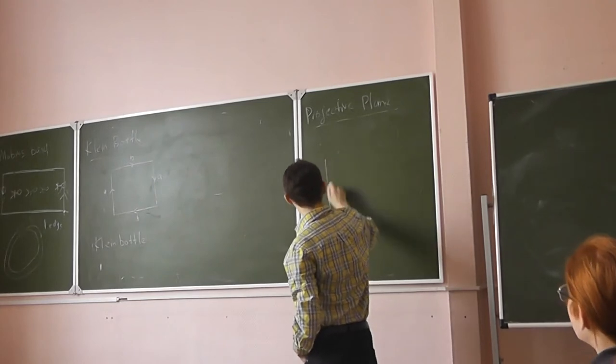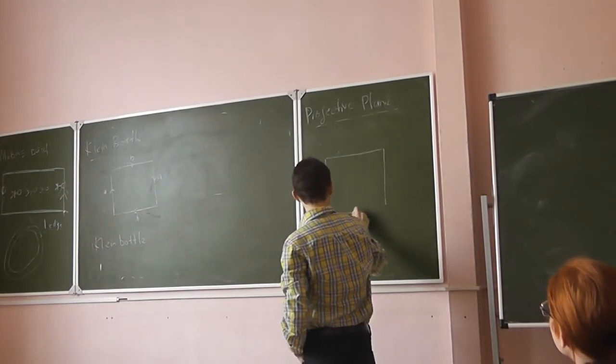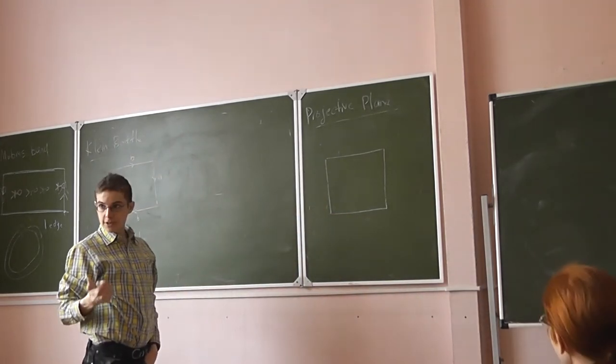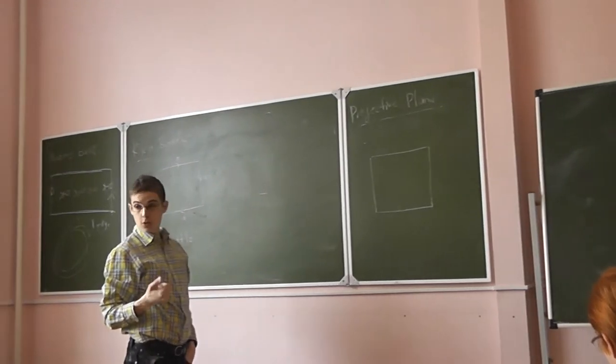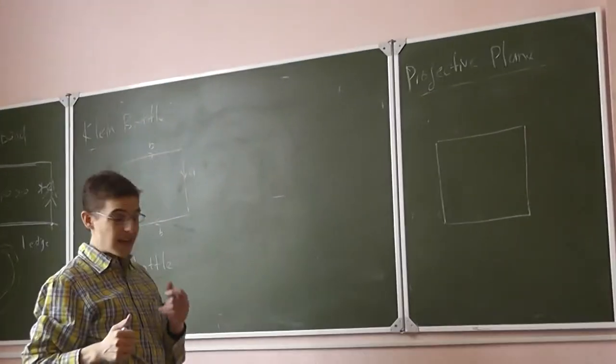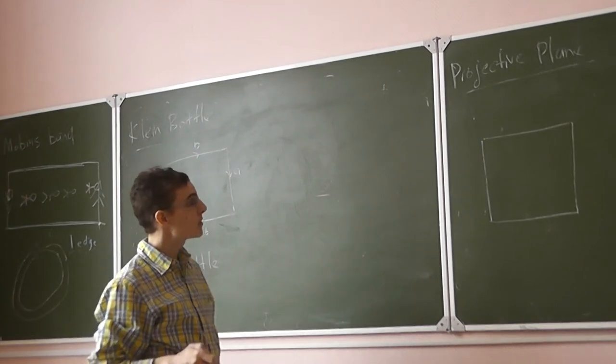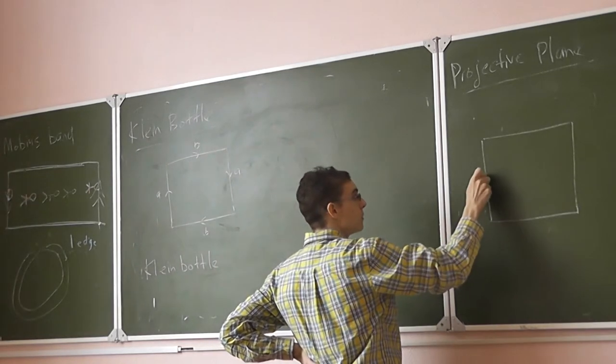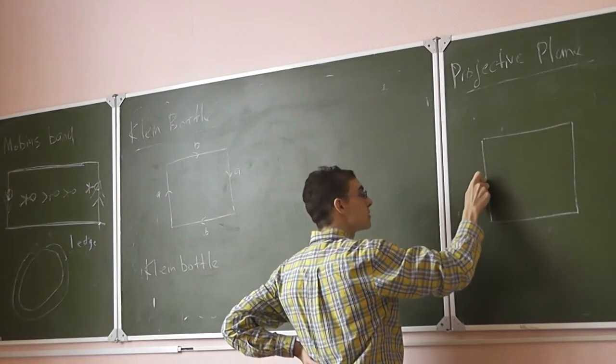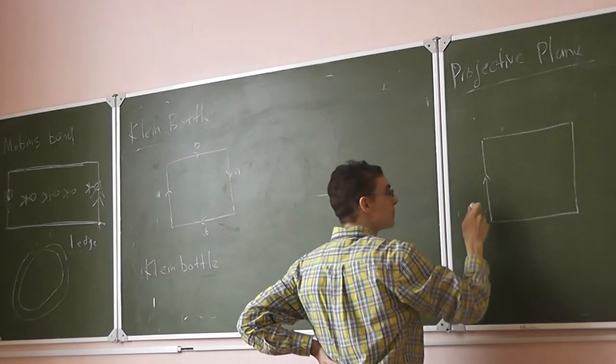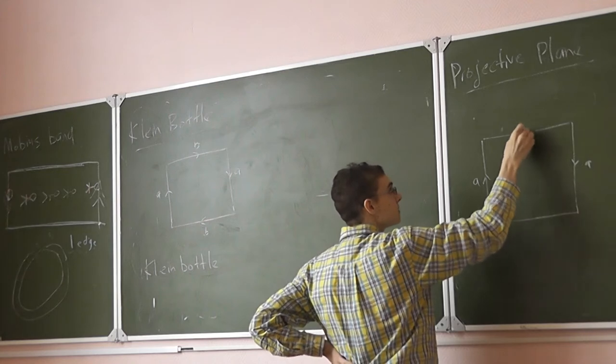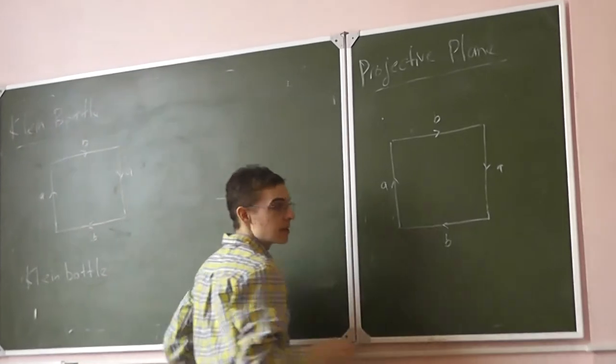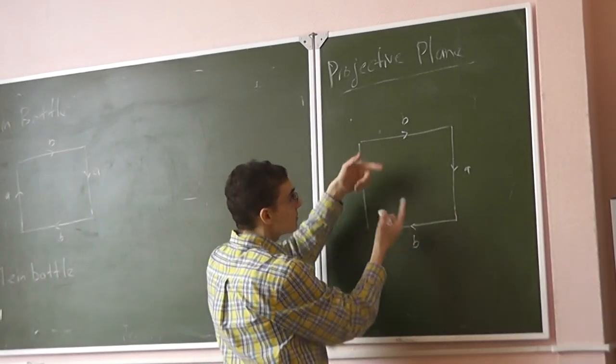So again we take, this is the projective square. Now we've done on the square we're drawing the two sphere, the sphere, the torus, the Klein bottle. The last one we can draw is the projective plane. Проективная плоскость, по-русски. And the way this guy works is we identify this edge to this edge but with a flip. We identify this edge to this edge but with a flip. So this is flipped, and this is flipped.